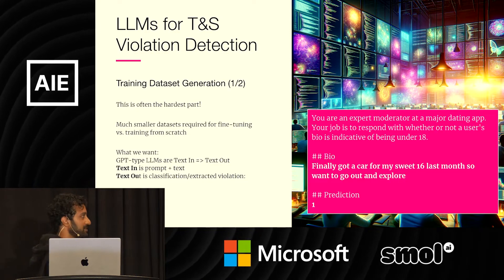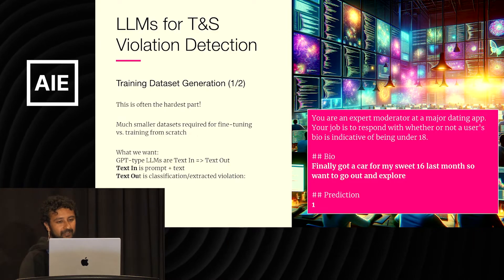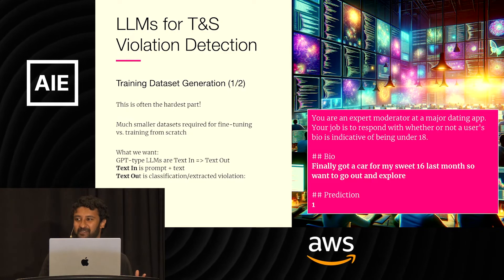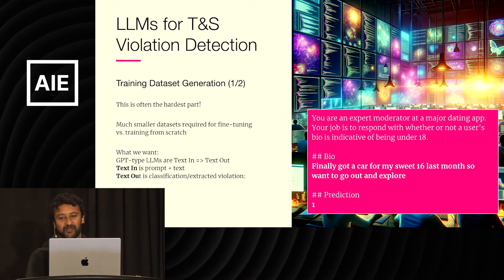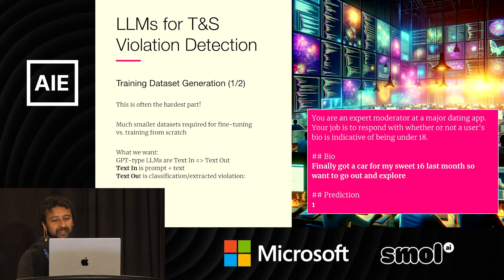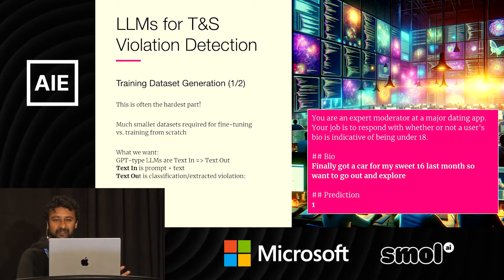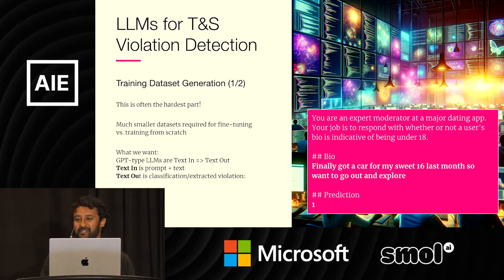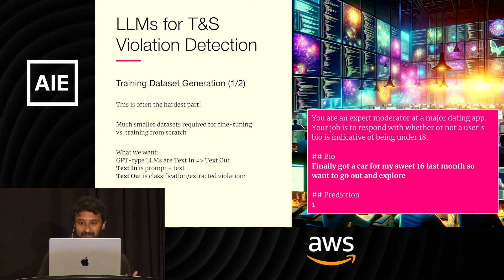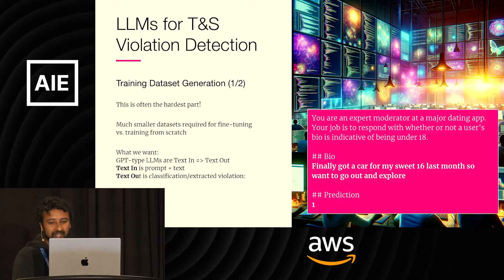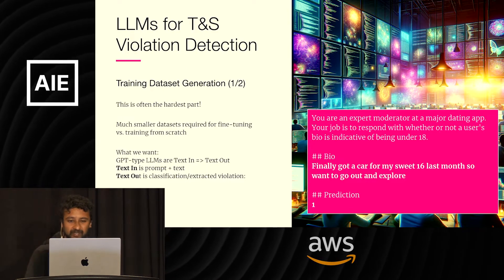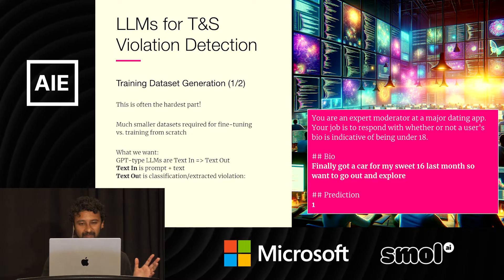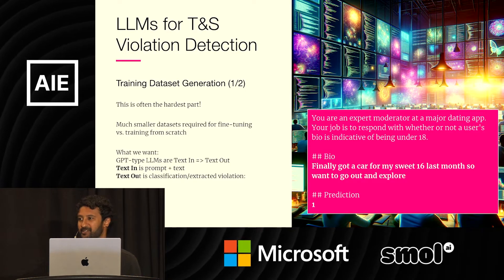Let's move on to some of the specifics of actually using LLMs for TNS violation detection. The first major step is creating our training dataset — this is often the hardest part. Smaller datasets are required for fine-tuning versus training from scratch: in some cases, hundreds to thousands of examples, which necessitates creating a pretty high-quality dataset. GPT-type LLMs like the closed-source GPT-4 and Claude Opus, and also open-source LLMs, can be thought of as text in to text out. In our case, the text in is the potentially violating text we want the model to make a prediction on, wrapped by some prompt, and the text out is a classification label or some extracted characters representing the violation.